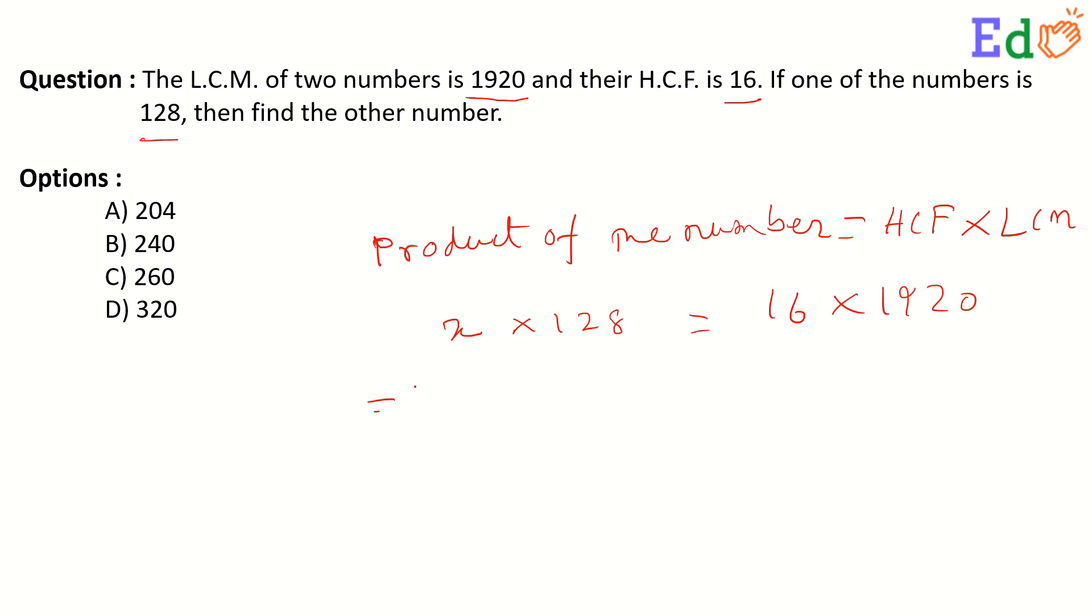That means X equals 16 into 1920 divided by 128. So cancel this one. This is 8. Cancel 8 with this.